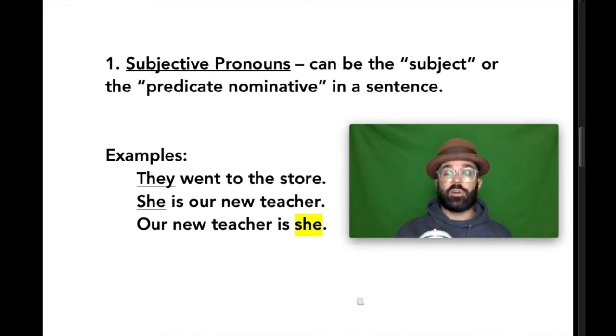In that sentence, she is our new teacher. Teacher is the predicate nominative. She is the subject. But she is teacher. And teacher is she. And so if I wanted to invert that, I could write, our new teacher is she. Teacher is the new subject. And she is a predicate nominative. Got it?